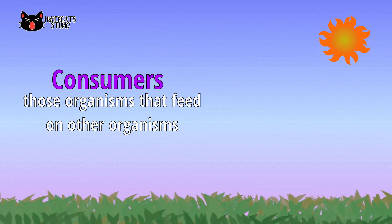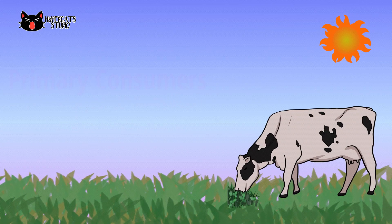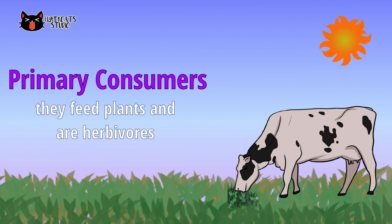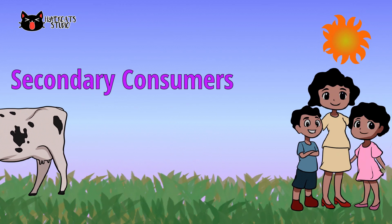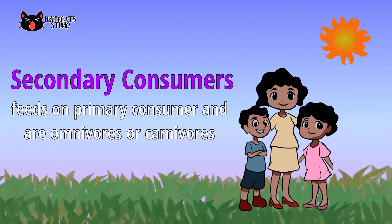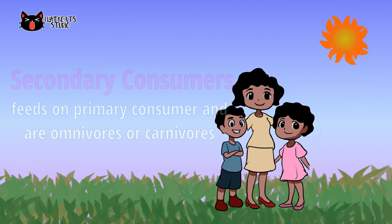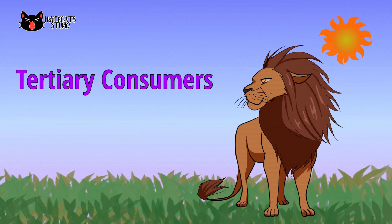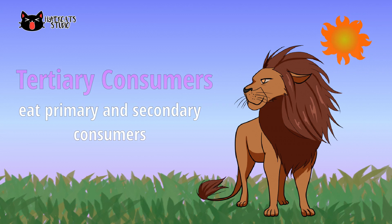Consumers are organisms that feed on other organisms. Some consumers feed directly on plants — they are called primary consumers and are herbivores. Secondary consumers feed on primary consumers; they can be omnivores that eat both plants and animals, or carnivores that eat animals only. Tertiary consumers are animals that eat primary and secondary consumers.